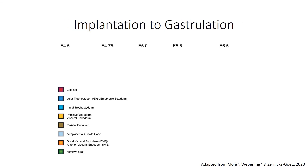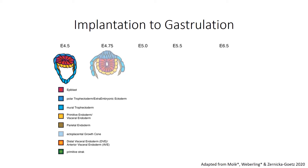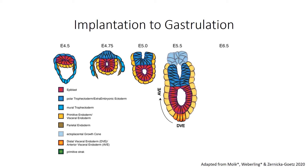At E4.5 the blastocyst implants into the maternal endometrium through its mural trophectoderm. The polar trophectoderm vastly remodels from a single cell layer to a multilayered epithelium, which invaginates and gives rise to the egg cylinder at E5.0. During the following 1.5 days of development, the embryo establishes its anterior-posterior axis through signaling from the trophectoderm and inhibitory signaling from a small population of the visceral endoderm, the distal visceral endoderm.